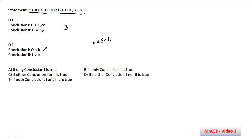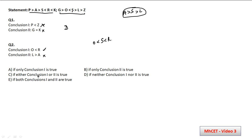The next conclusion says L > A. From the statements, S > L and A > S, meaning A > S > L. So L is not greater than A — that is not possible. This conclusion is false. Therefore, our answer for this question is option A — only conclusion 1 is true.